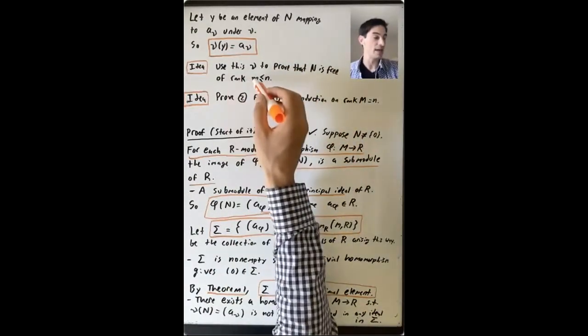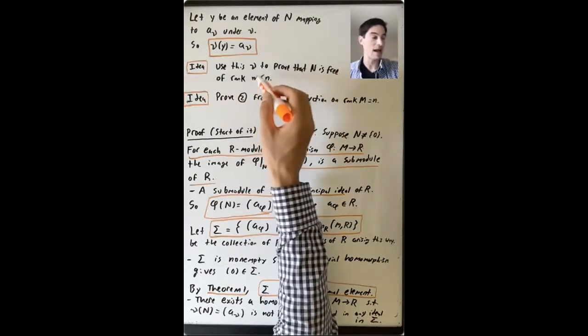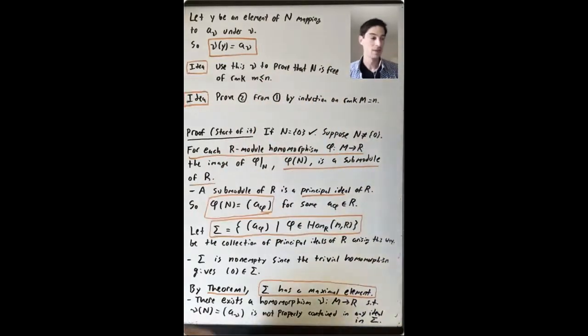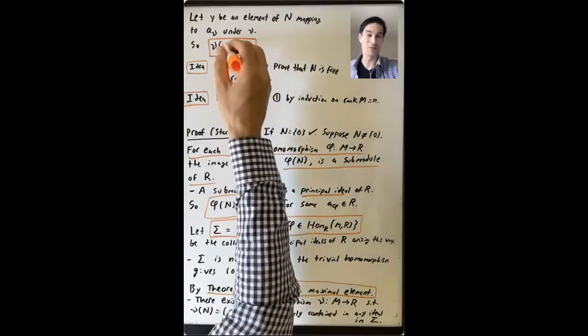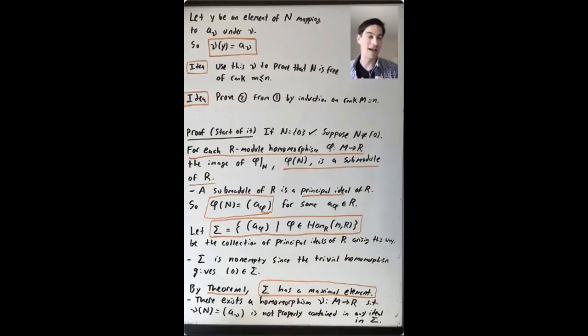And the idea is that we're going to use this special homomorphism nu and this special element Y to prove that N is free of rank M, where M is less than or equal to N. We're going to build one special element out of this Y, and then we're going to write N as a direct sum of a free module of rank one, and then something else, and we'll argue by induction.